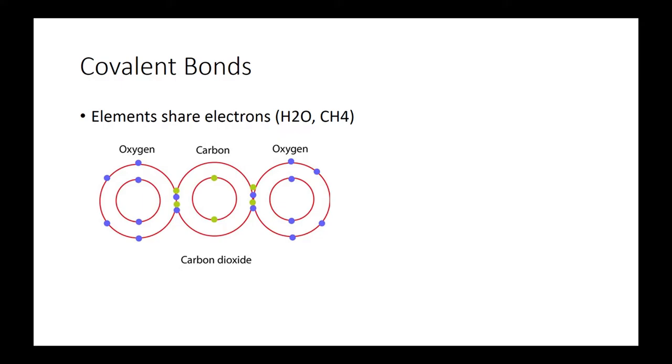Covalent bonds, so elements are sharing electrons. If you look at the picture, these four are being shared and these four are being shared, and this is obviously carbon dioxide, CO2. The oxygen, carbon, and oxygen all want eight electrons around the shell. Oxygen has four here and oxygen has four here, so it needs four more. However, carbon needs eight too, so it shares four with this one and four with this one. Some examples are H2O and CH4.